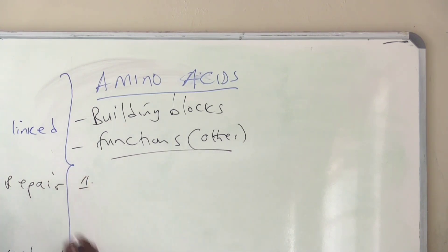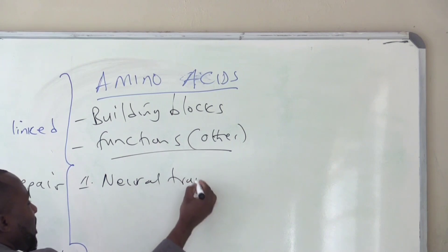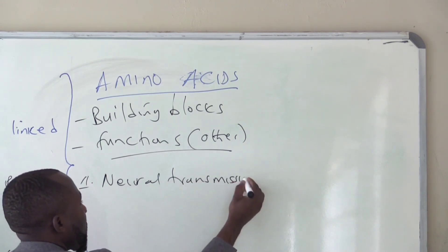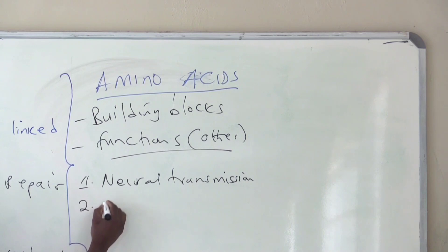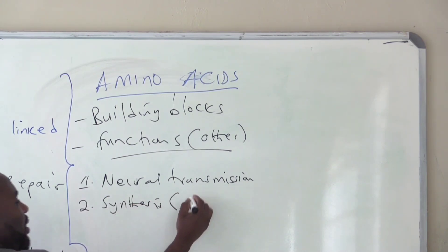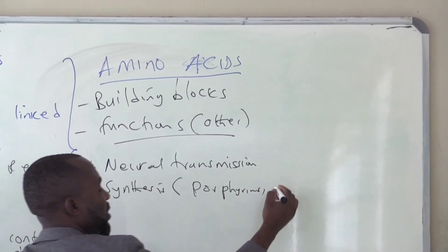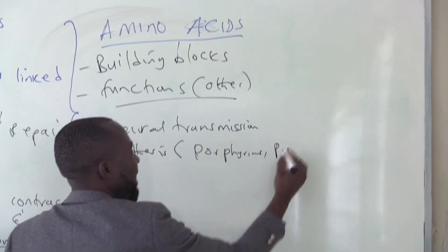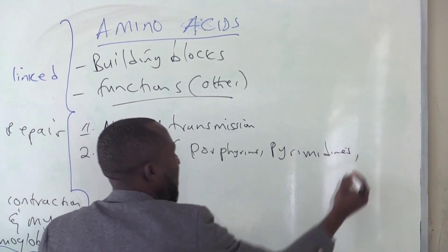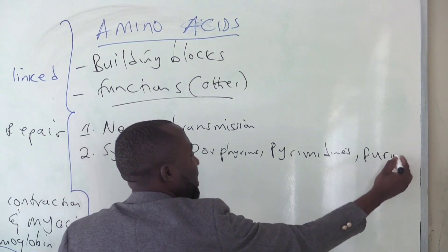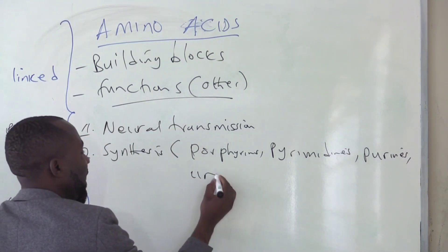They also have other functions in the human body. For example, some of the amino acids and their derivatives, they are actually used in neurotransmission. Others are used in the synthesis of porphyrins, synthesis of pyrimidines, synthesis of urea.